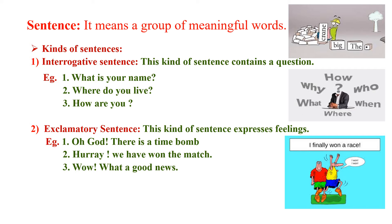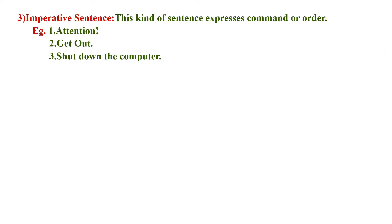The third type of sentence is the imperative sentence. This kind of sentence expresses a command or order — an order given by a judge or any authority. For example: 'Attention!' or 'Get out!' or 'Shut down the computer' — these are orders given by one person to another.